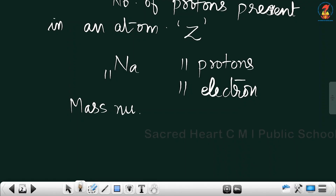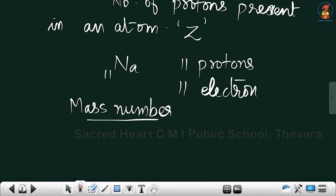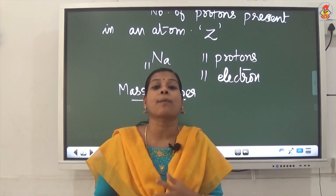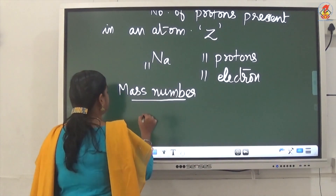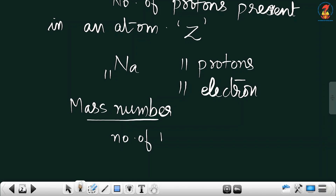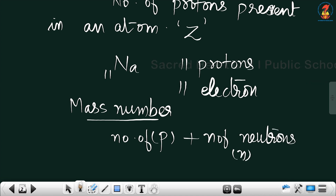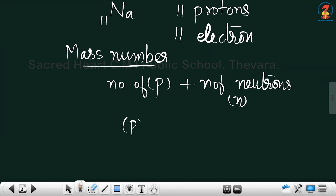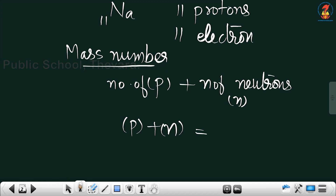Mass number is the sum of the number of protons and neutrons present in an atom. If we represent the number of protons as P and the number of neutrons as N, then P plus N gives you the mass number. Mass number is denoted by the capital letter A.